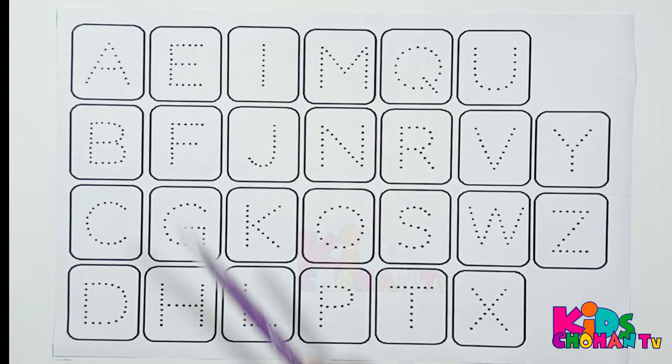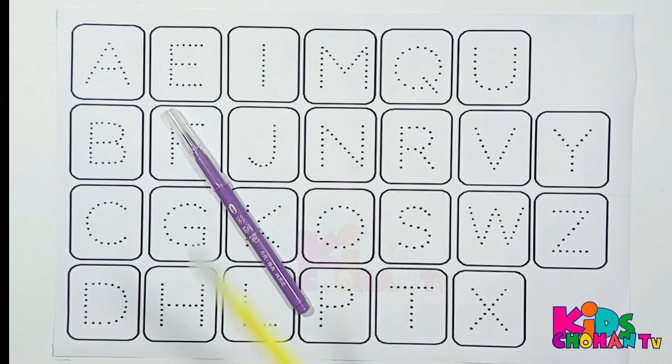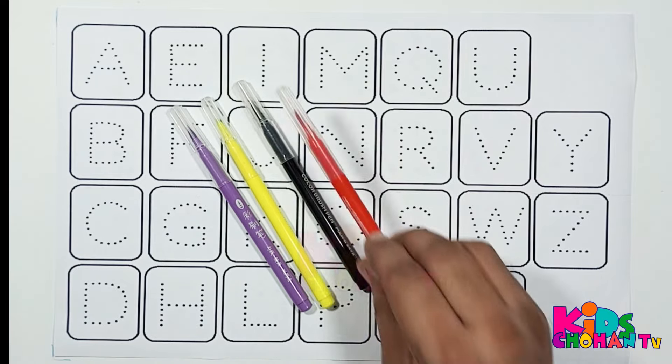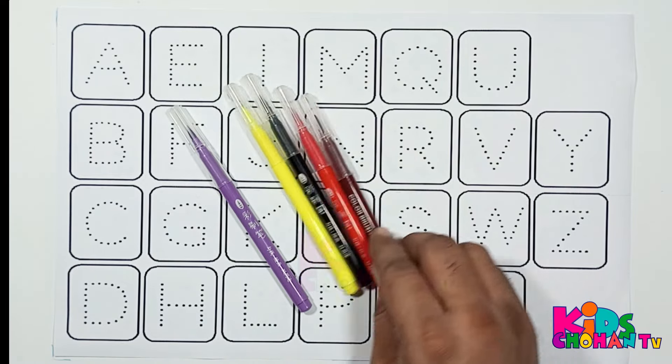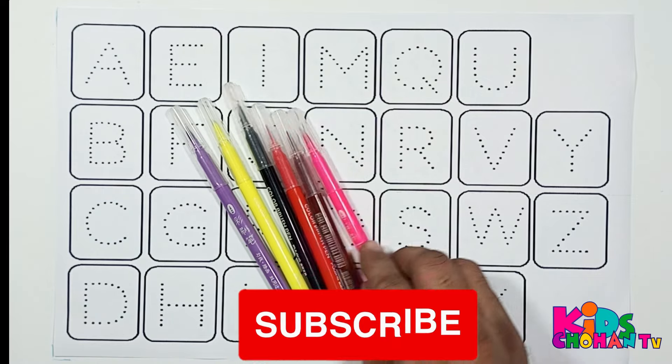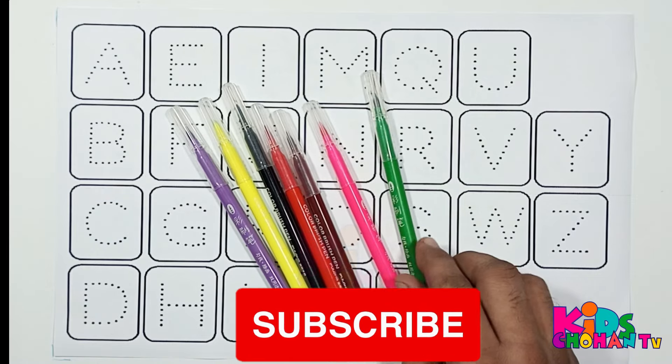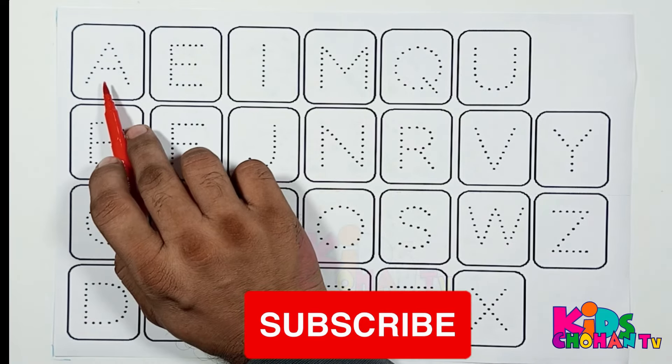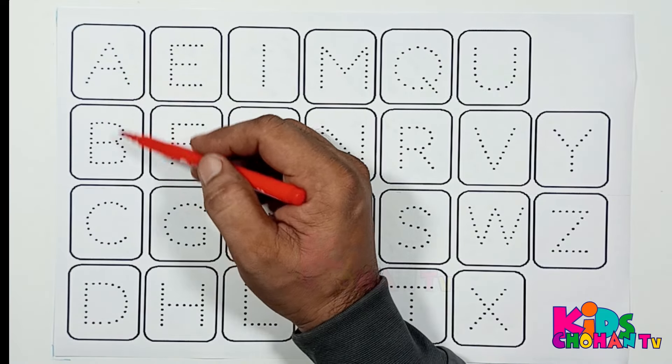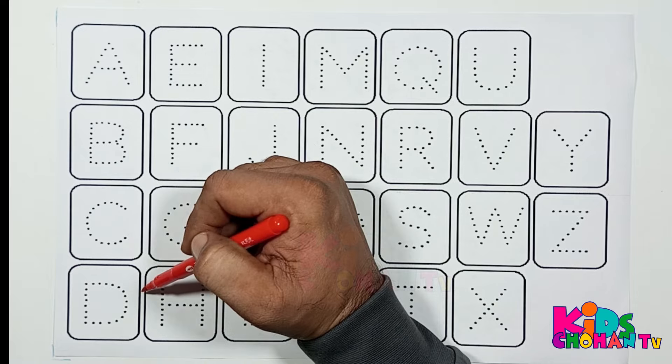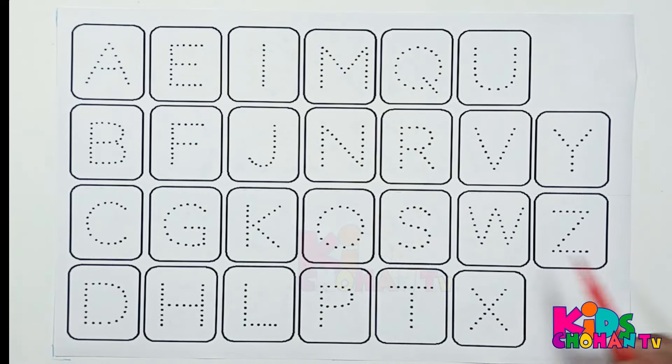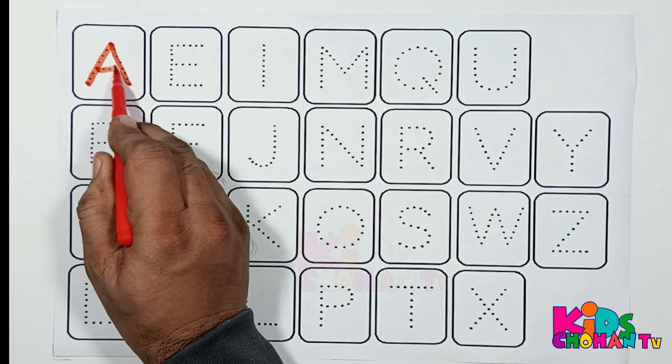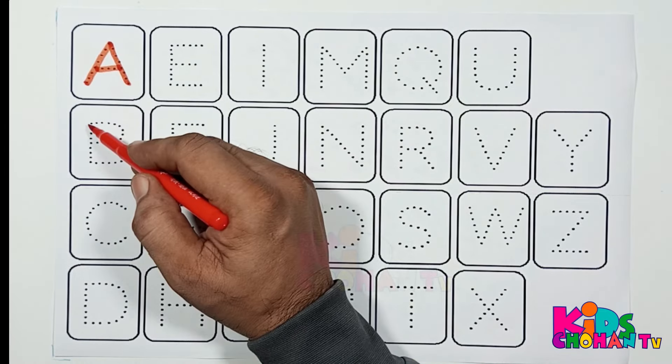Hi kids, welcome back! Purple color, yellow color, black color, orange color, brown color, pink color, green color. Kids, in this video we will trace A B C, A to Z. Let's start. A, A for apple.